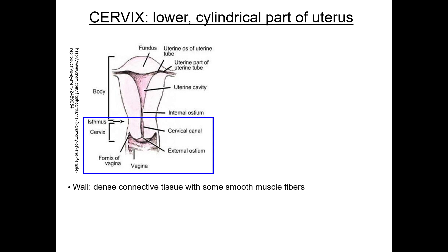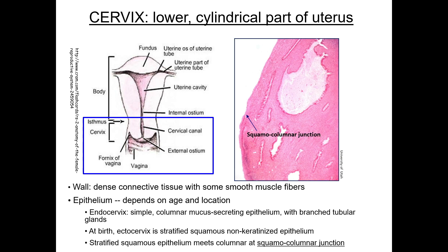Let's move on and look at the lower cylindrical part of the uterus, the cervix. The cervix is the part of the uterus that bulges into the vagina. The walls of the cervix do not contain large amounts of smooth muscle like the rest of the uterus, but are mostly dense irregular connective tissue. This connective tissue is covered with epithelium, mostly a simple columnar mucus-secreting epithelium, similar to most of the uterus. But as the cervix gets closer to the vagina, in the area called the endocervix, this is lined with stratified squamous non-keratinized epithelium, just like the vagina. The location where the two types of epithelium meet is termed the squamous columnar junction, which can be seen in this H&E stained section.